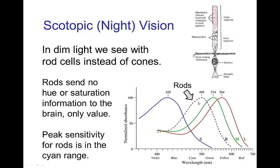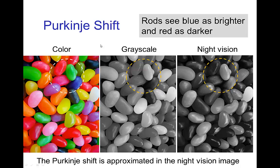Because of this, we have the so-called Purkinje shift, which is that the rods see blue as brighter and red as darker. So this night vision, which only has a sense of value, is not the same as what you would find with grayscale, because blue things or things towards the blue side of the spectrum are brightened, whereas things towards the red side of the spectrum look darker. The image on the right is an estimate of what these jelly beans would look like when seen only with the rods.